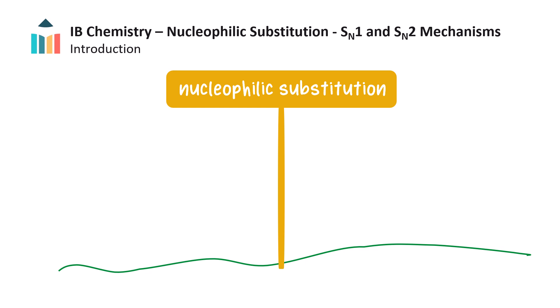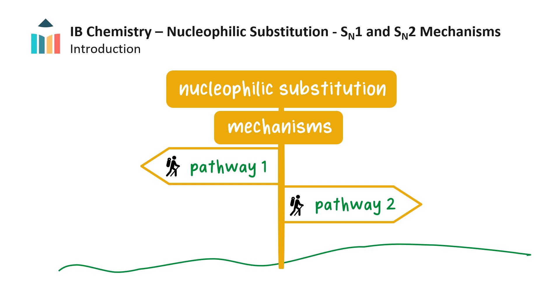We have already learnt a bit about nucleophilic substitution reactions. In this video we will investigate two different reaction pathways by which this type of reaction can occur. We call these pathways mechanisms. We will also learn about the difference in these two pathways in terms of the molecules they involve and the rate laws of these mechanisms.